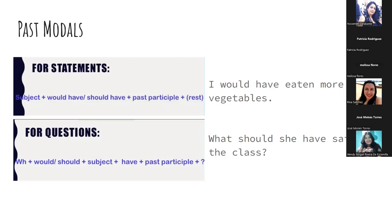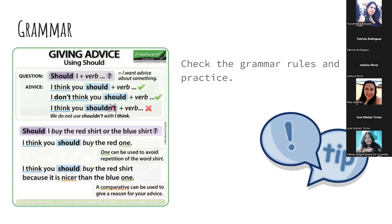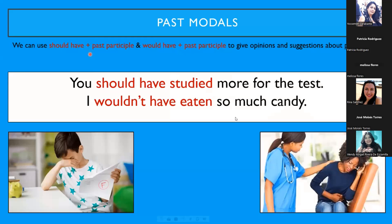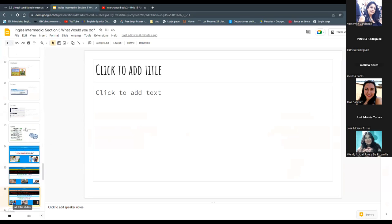This is like giving advice. 'Should I + verb?' — 'I think you should + verb.' Or in the negative: 'I don't think you should have done that.' We don't use 'shouldn't' with 'I think.' For example: 'Should I buy the red shirt or the blue shirt?' — 'I think you should buy the red shirt because it's nicer than the blue one.' We can also add more information. We'll review this tomorrow.